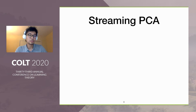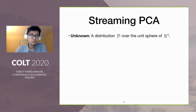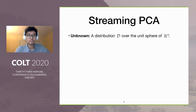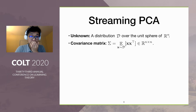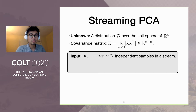Now we know that PCA could be a good candidate, and due to the online nature of retina, it is very natural to study the streaming setting. Streaming PCA is a well-studied problem in computer science. There's an unknown distribution D over the unit sphere of n-dimensional Euclidean space, where the covariance matrix is naturally defined as the expectation of x x-transpose sampled from D. The input to streaming PCA is a sequence of vectors sampled from D independently in the stream.